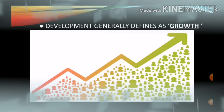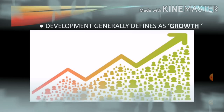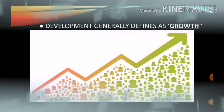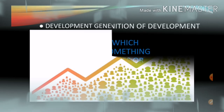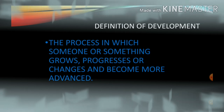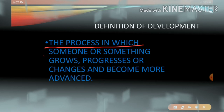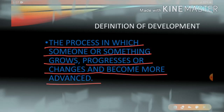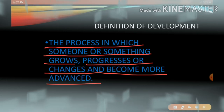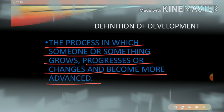Development is generally defined as growth. When we discuss the definition of development, it is the process in which someone or something grows, progresses, or changes and becomes more advanced. In other words, it is a process in which a person, industry, or thing grows, progress happens, changes come, and because of those changes it becomes advanced — that is called development.